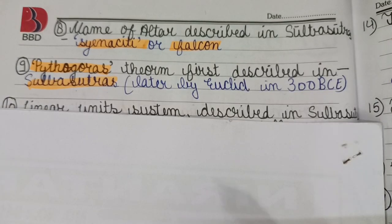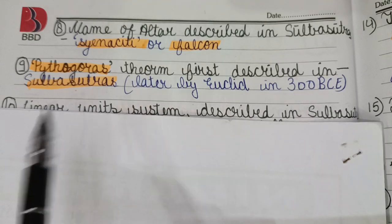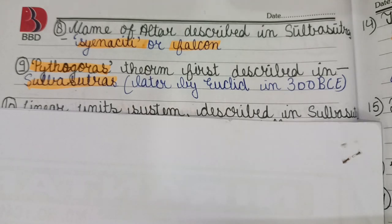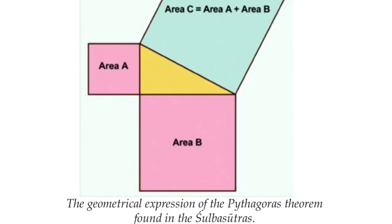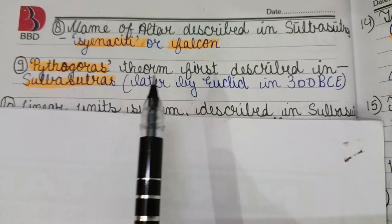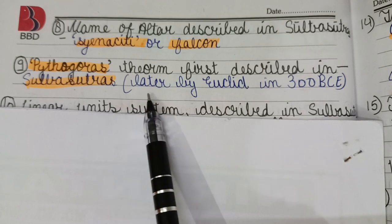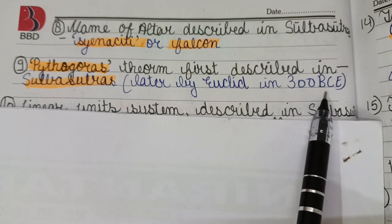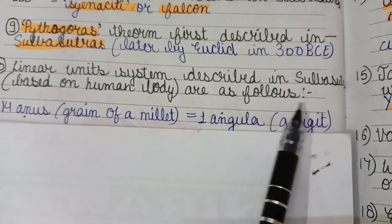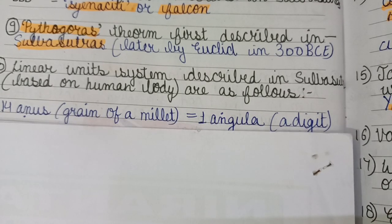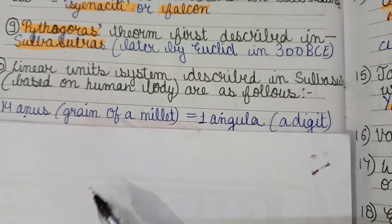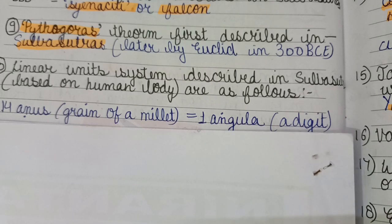The Pythagoras theorem was first described in the Sulva Sutras, predating Euclid around 300 BCE. The measurement system described in the Sulva Sutras is based on the human body.